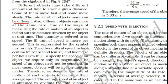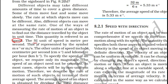Different objects can also move at the same rate. One way of finding the rate of motion is to find the distance travelled by an object in one second. This is referred to as speed. The SI unit of speed is meter per second, generally represented as m/s.